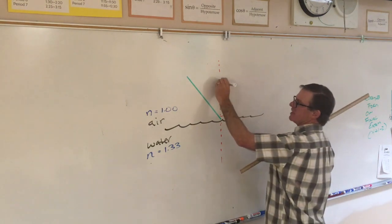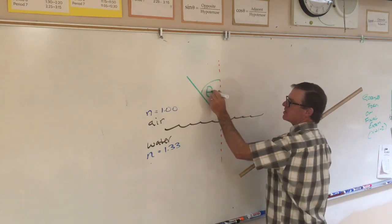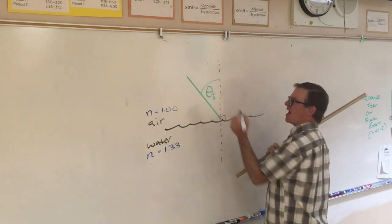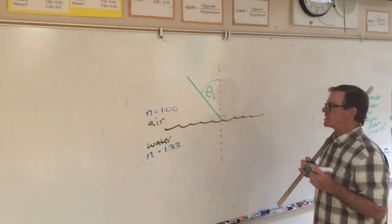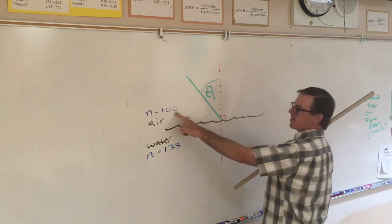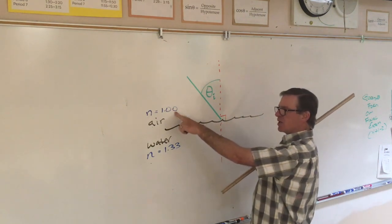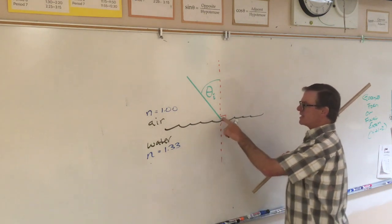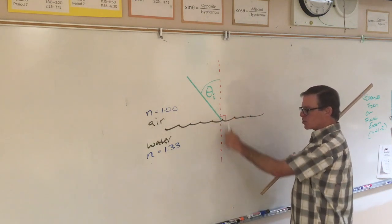Let's say light comes in at some angle relative to the normal, typically called theta i for the angle of incidence. If this material has a lower index of refraction, which air does compared to water, it is seen that the ray of light bends toward the normal.